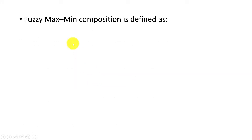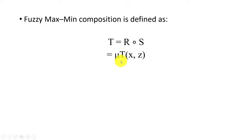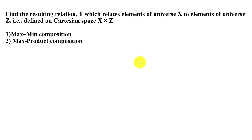This finally gives a result in the fuzzy relationship on X cross Z. Fuzzy composition can be done in two ways: the first is max-min composition, defined as T = R composed with S. R and S are the given matrices. You can represent it as the relation T on X cross Z, since the final result T relates X rows and Z columns.